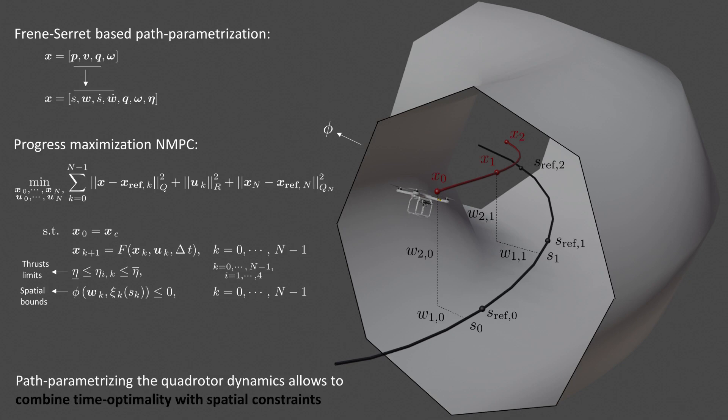To this end, we perform a path-parametric reformulation of the quadrotor system dynamics based on Frenet-Serret frames. This enables a more precise embedding of the environment's geometric properties into the underlying optimization problem.